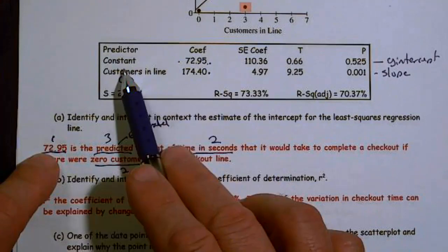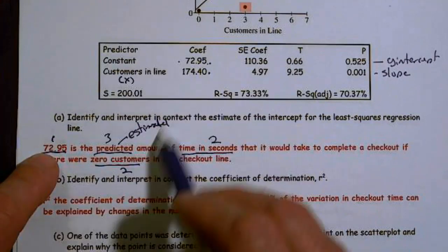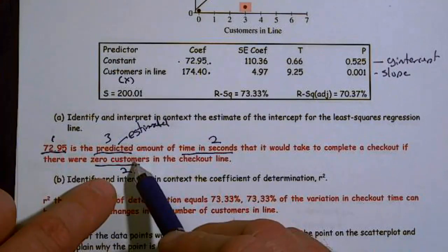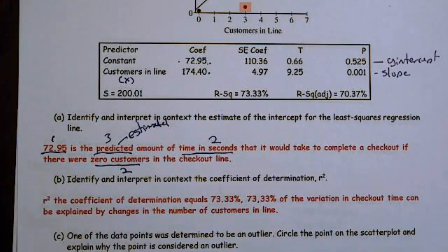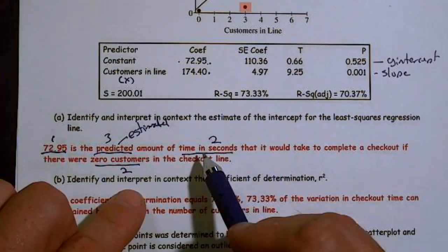If you didn't have those, you were going to get partial credit. Basically three different things that had to happen. You had to identify the actual y-intercept, 72.95, right next to the constant.